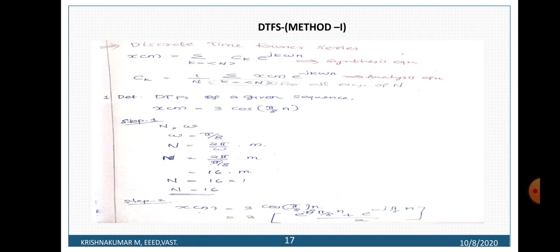Step 1: Identify omega, which is the coefficient of n. Here omega is equal to π/8, since pi over 8 is the coefficient of n in x of n.